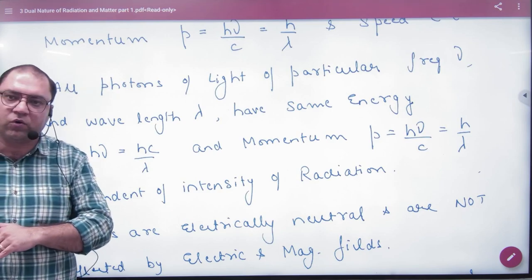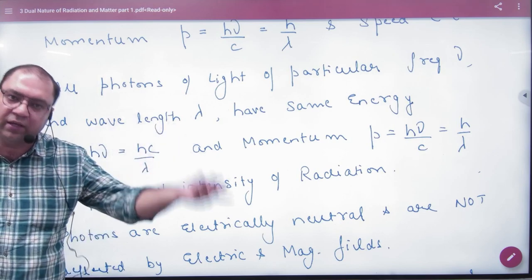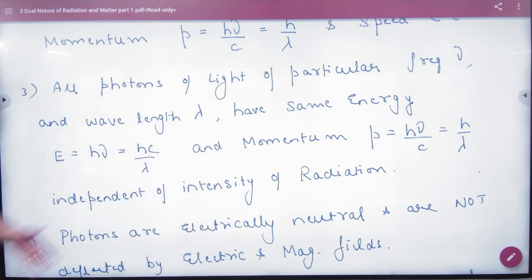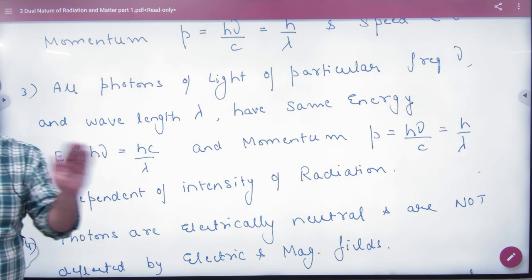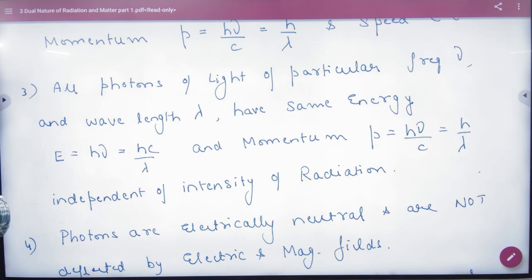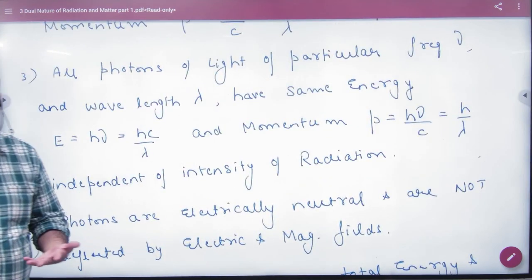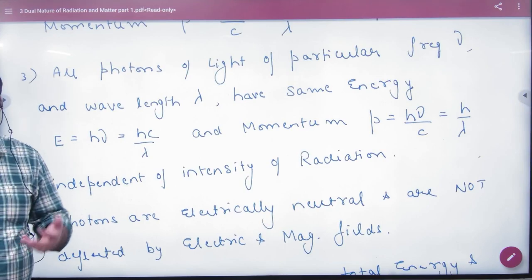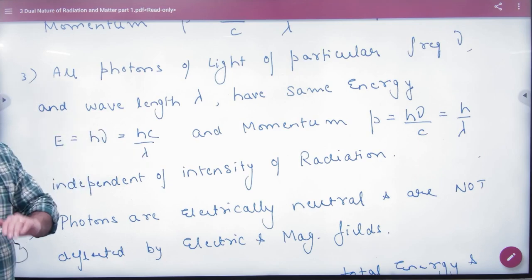So, if you take a radiation, the frequency of all photons are the same. So, energy is also the same. Momentum is also the same. These two things are dependent on the frequency. If the frequency is the same, then the energy of all photons are the same. But what is independent of intensity? Frequency is the same, then the energy is the same. The number of photons don't count.